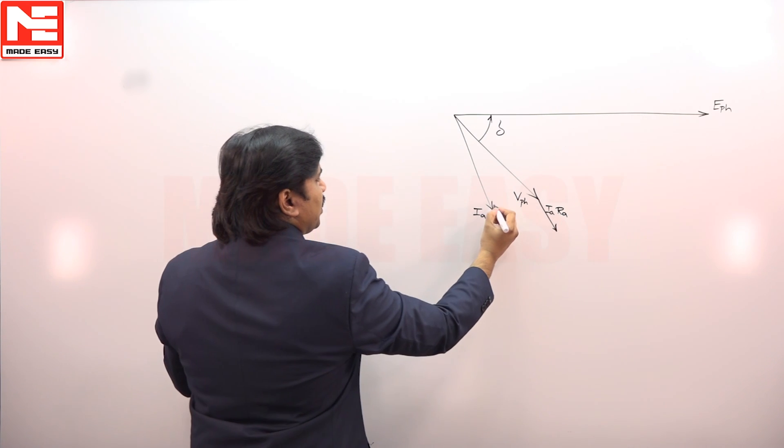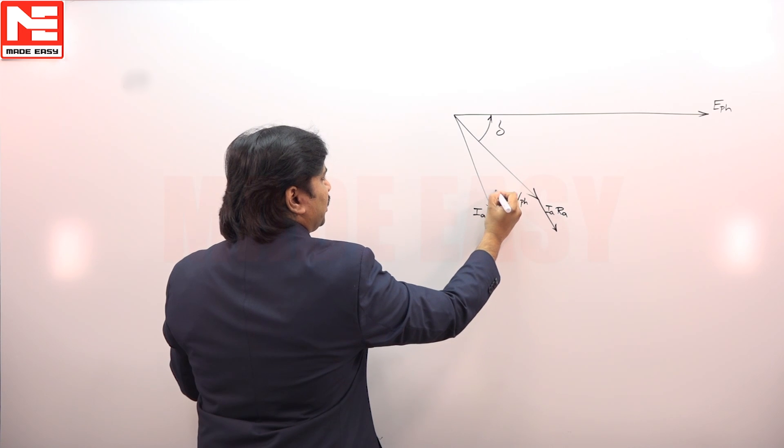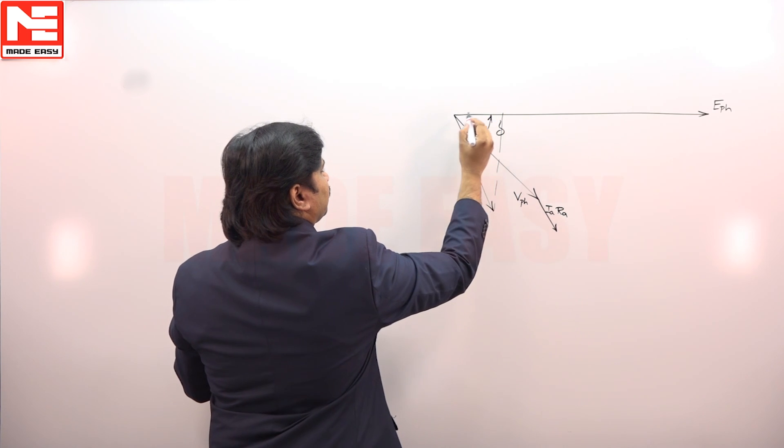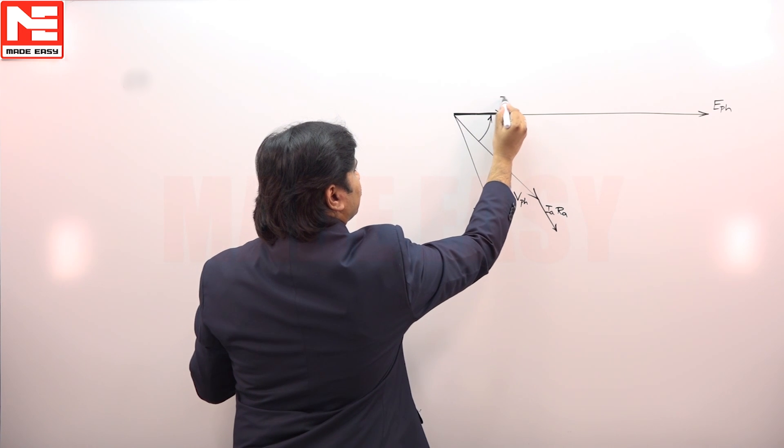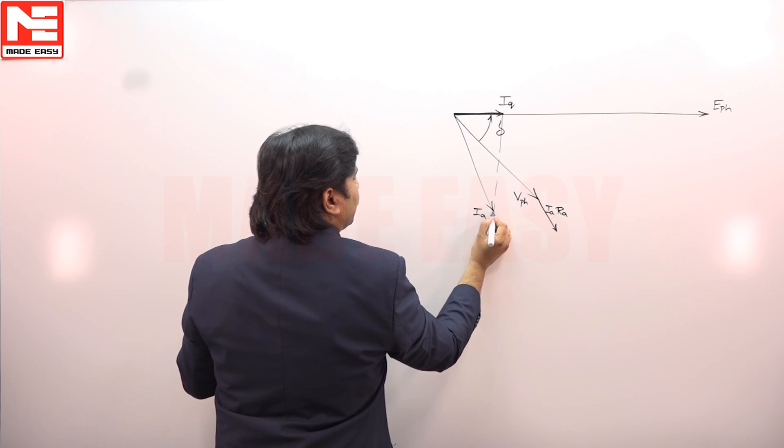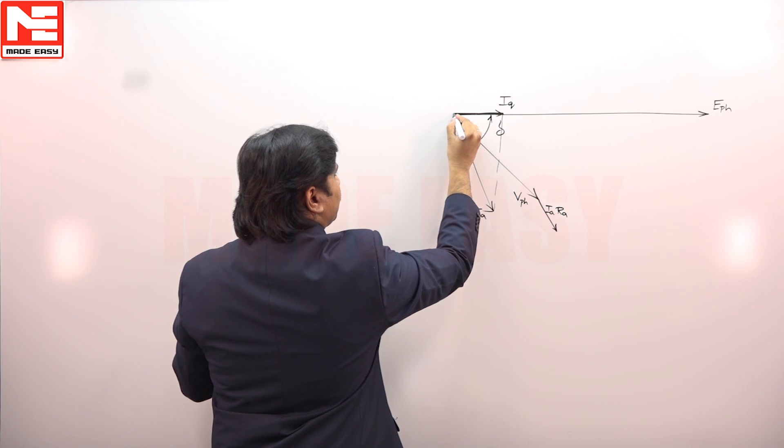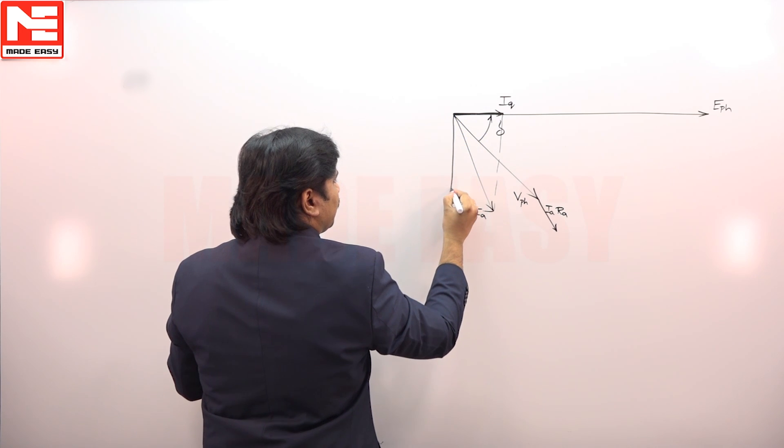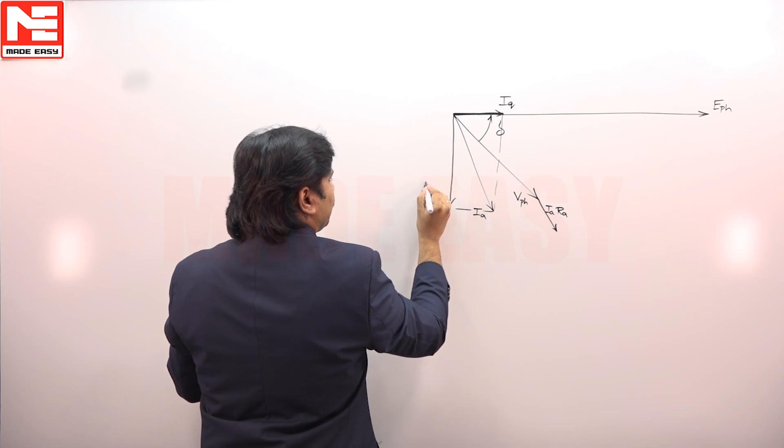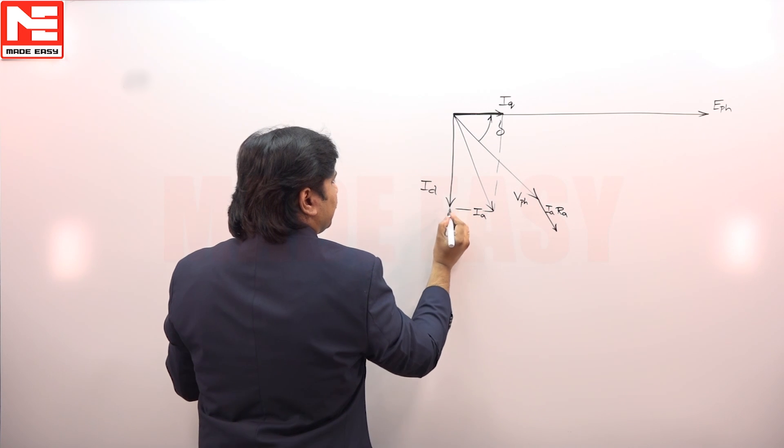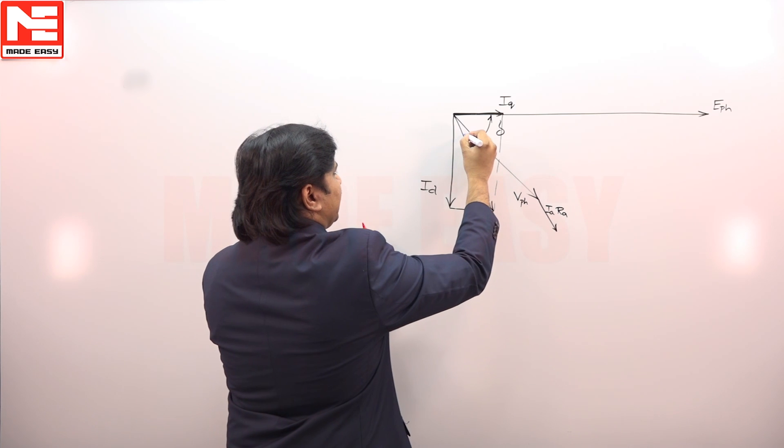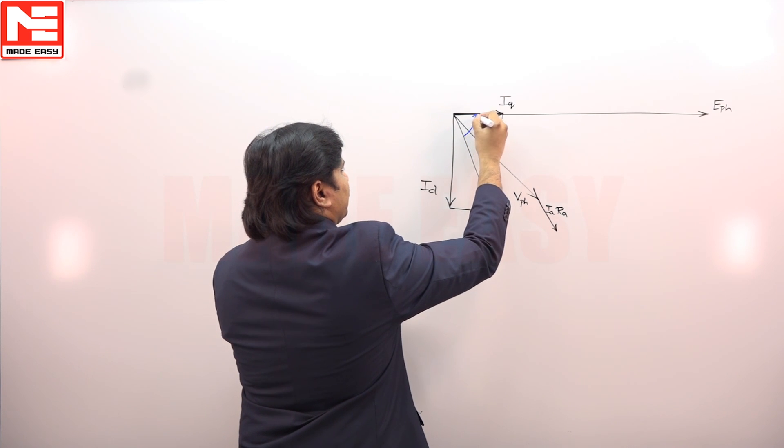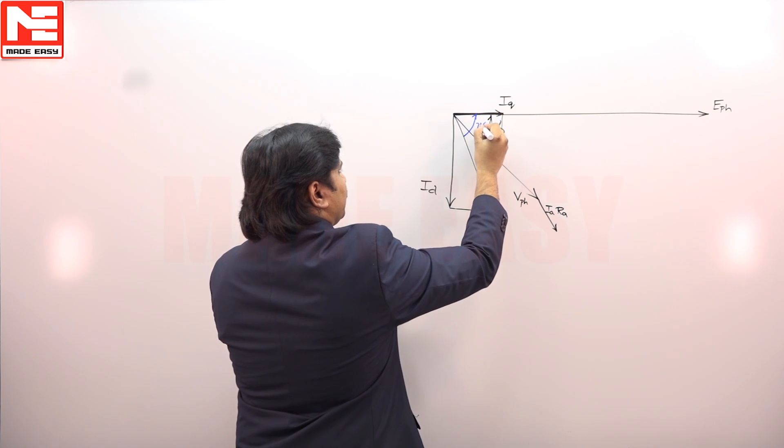Next, there will be IA resolved into two components. One is IQ, quadrature axis component, and ID. The angle between E and IA is psi.